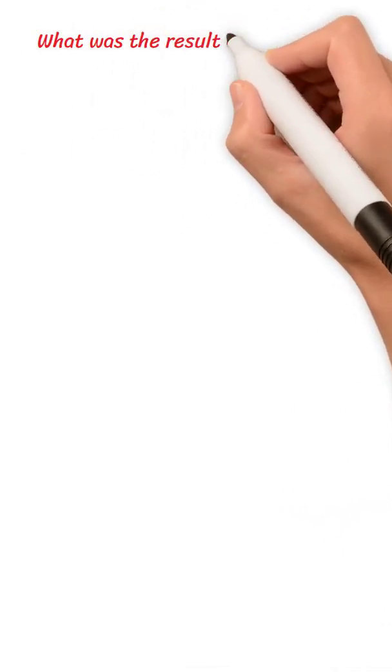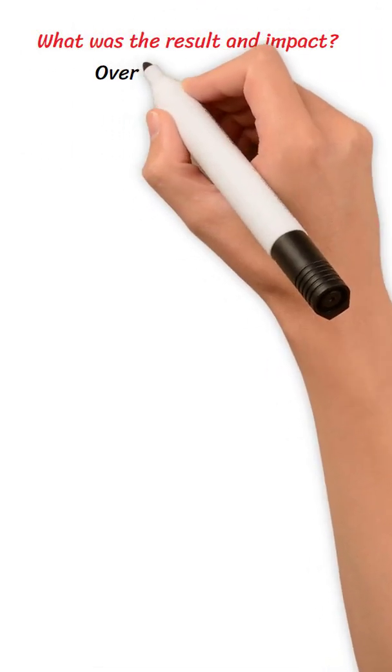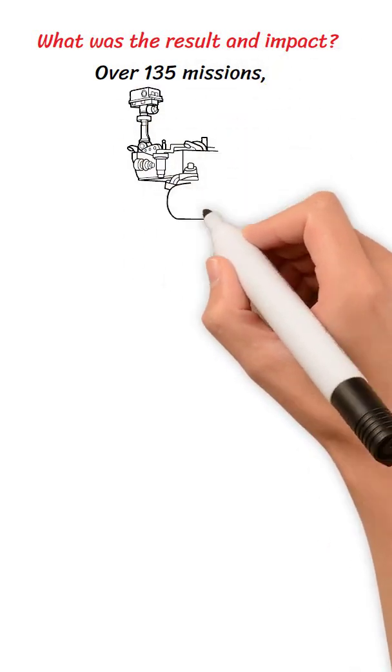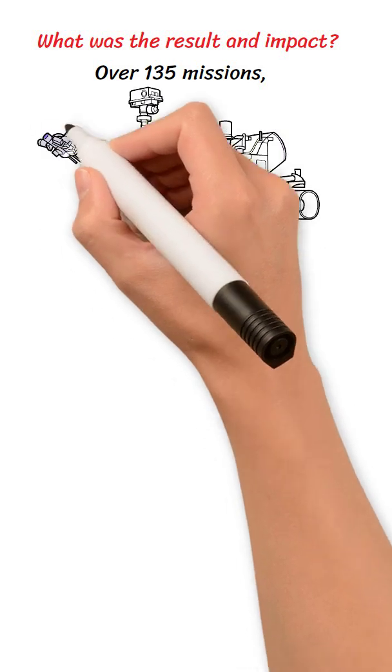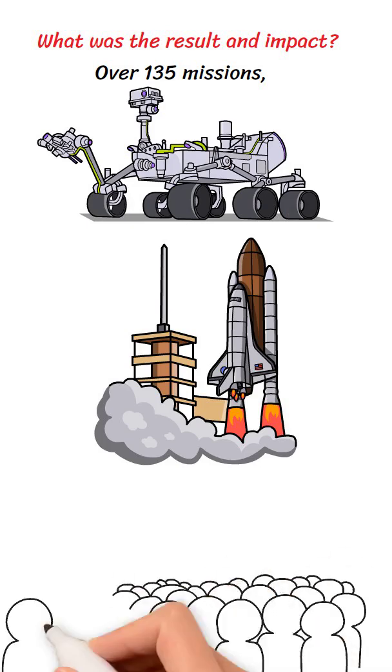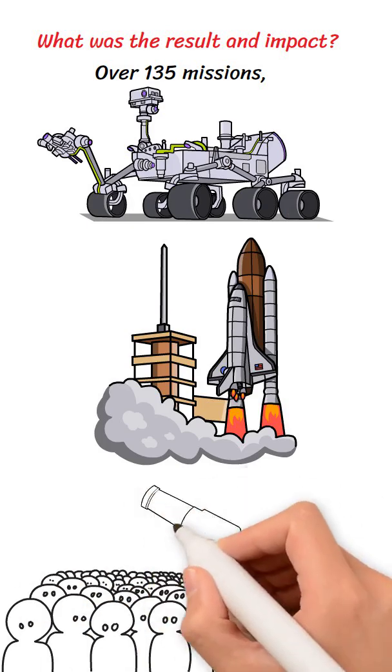What was the result and impact? Over 135 missions, the space shuttle enabled satellite deployment, international space station construction, and scientific experiments in orbit. It proved the feasibility of reusable spacecraft and inspired the next generation of space vehicles.